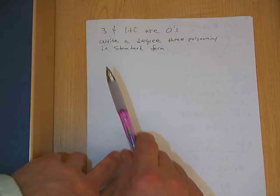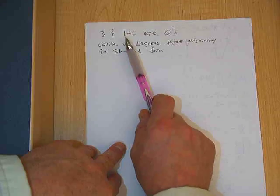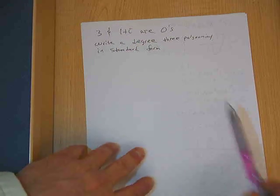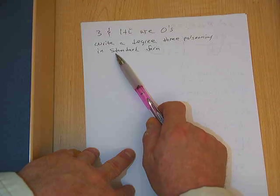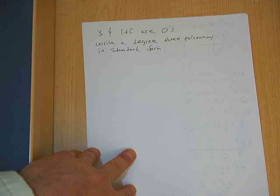All right, in this problem, I am giving you two zeros: 3 and 1 plus i. And I want you to write a degree 3 polynomial in standard form.